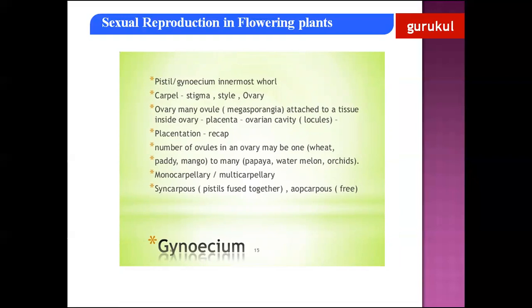The female sex organ is called the gynoecium, also called the pistil. Gynoecium is the innermost whorl. The units of gynoecium are called carpels. Each carpel has a stigma, style, and ovary. The stigma forms the receptive surface which helps in receiving pollen grains. The style is the long part that helps in the growth of the pollen tube. The swollen part is the ovary, and inner to the ovary there are many ovules attached by a tissue called the placenta. The cavity of the ovary is called the locule, and it is inside the locule where the ovules are seen.